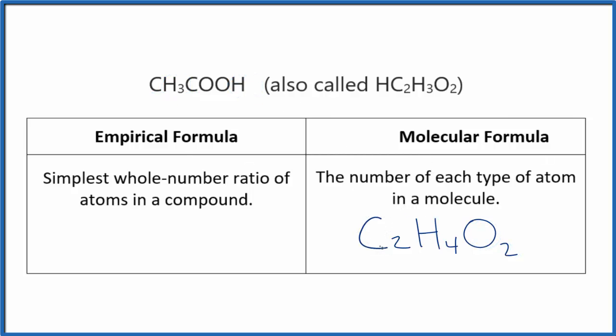Our molecular formula tells us each type of atom, how many we have of each type. The empirical formula, that's the simplest whole number ratio of the atoms.